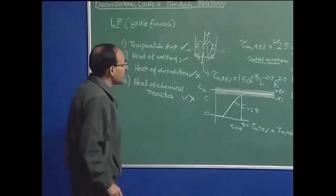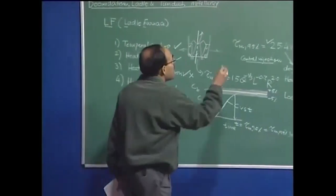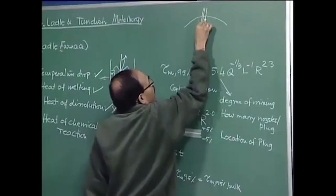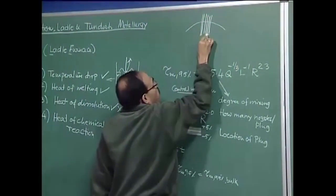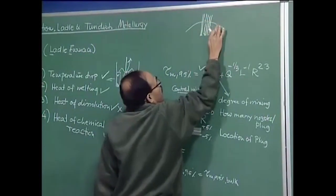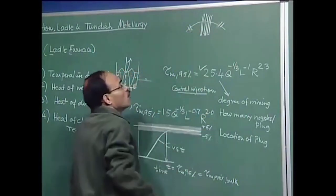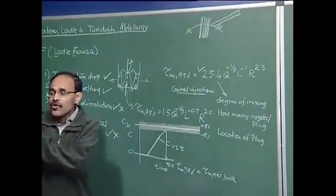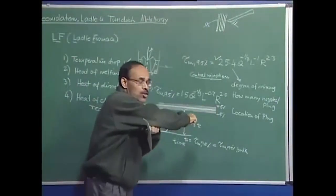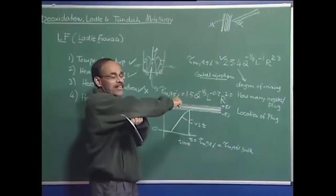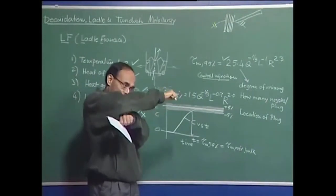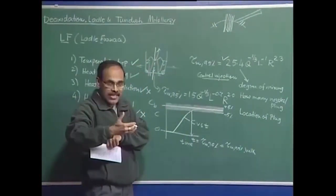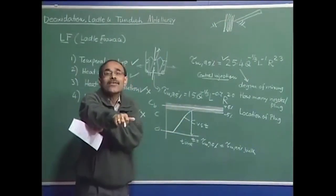How does a ladle furnace look? The ladle is converted into a ladle furnace simply by adding a roof through which we have an arrangement with electrodes — three electrodes — and this roof can be attached to a movable arm. The roof and electrode assembly normally rests in the open; when the ladle arrives after tapping at the ladle furnace station, the arm rotates and places the electrodes and cover over the ladle.